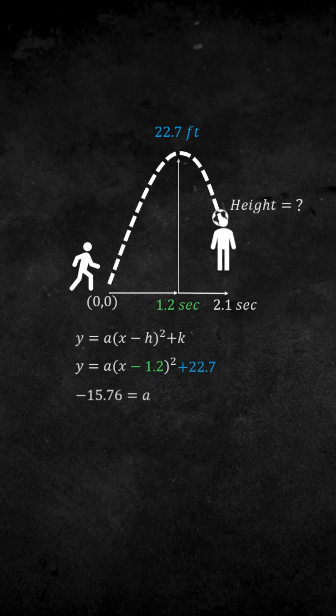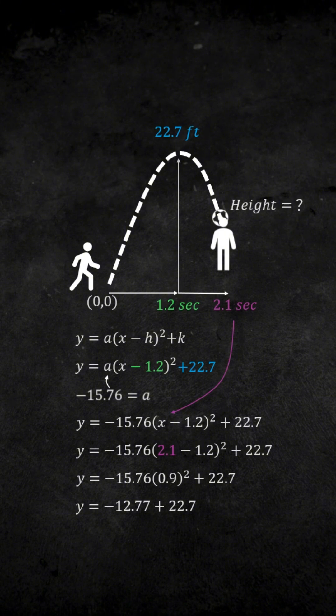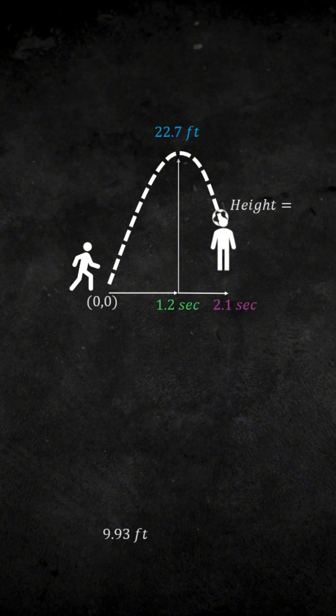Now, if we take this and sub this in for a in our original equation, we can get the following. We can now take our 2.1 seconds and sub this in for x in our original equation. Now, if we simplify this equation and solve for y, we find that y is equal to 9.93 feet, meaning that our player headed the ball 9.93 feet in the air.